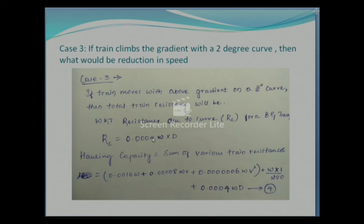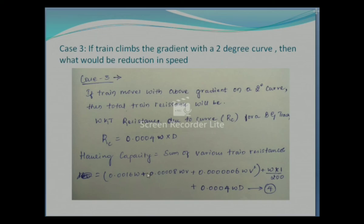For meter gauge the coefficient would be 0.003, and for narrow gauge it would be 0.002. Since this is a broad gauge track, RC = 0.004WD. The total train resistance now includes RT1 + RG + RC — train resistance, gradient resistance, and curvature resistance — equated as Equation 4.